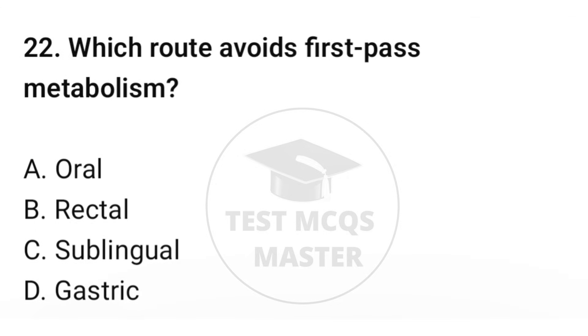Question number twenty-two: which drug avoids first-pass metabolism? The correct option is C: Sublingual route.